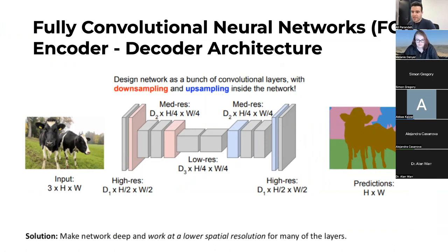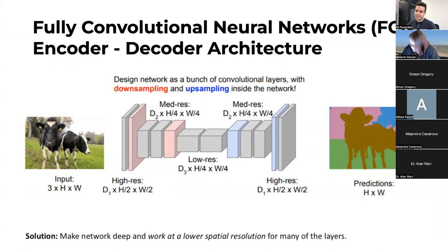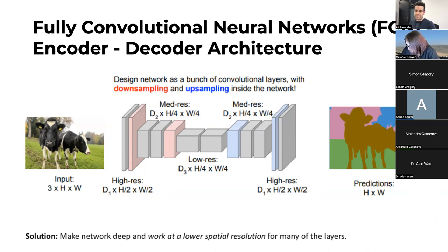When you use a fully convolutional neural network — an FCN — you're using an encoder-decoder architecture. You downsample an image and encode it into just the patterns available in that image. The network learns just the patterns. When you want to classify each pixel into the right class, you then decode that information using upsampling to the same resolution as your existing image, predicting what pixels those classes belong to.